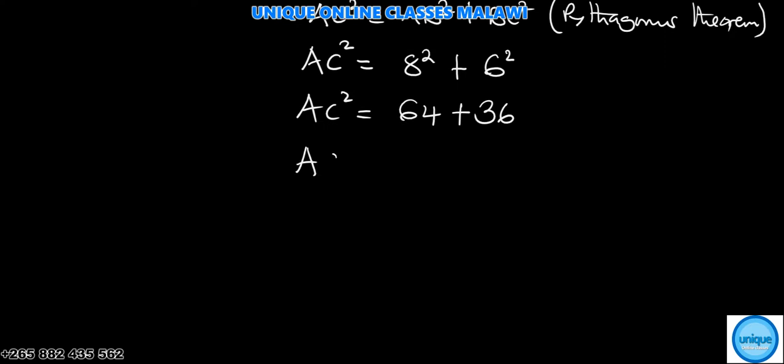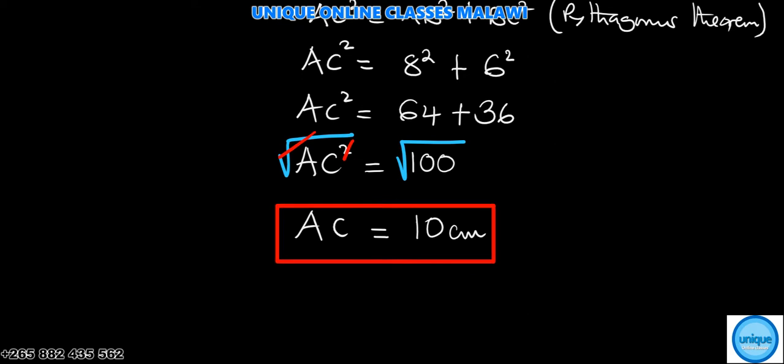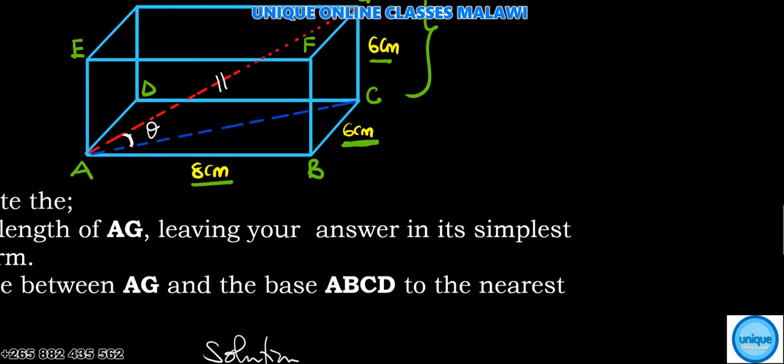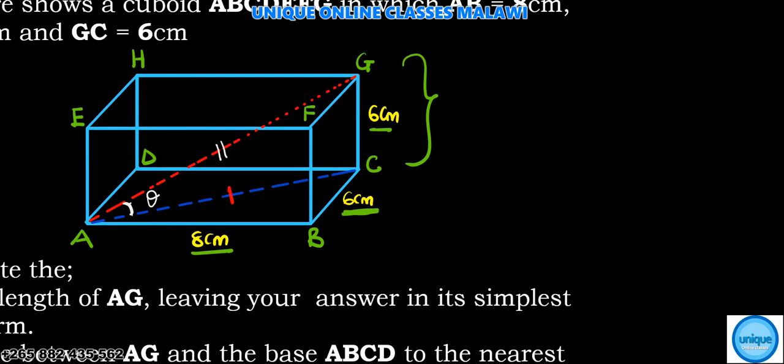So AC squared equals 100 square centimeters. To find AC, we square root both sides, and the square root of 100 is 10. So AC is 10 centimeters.